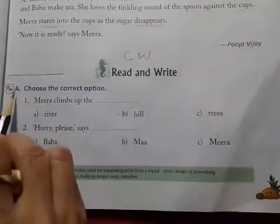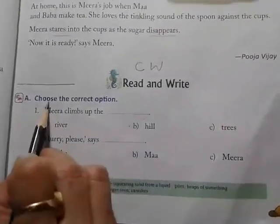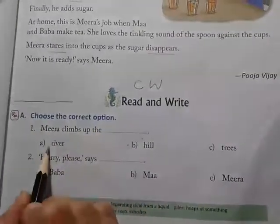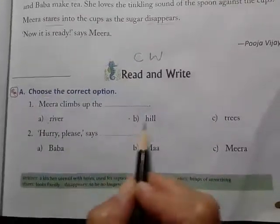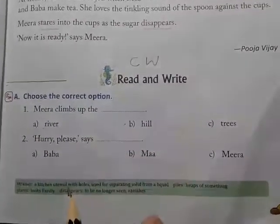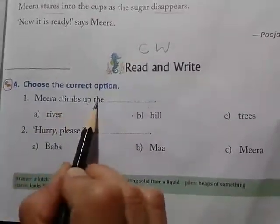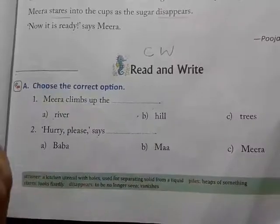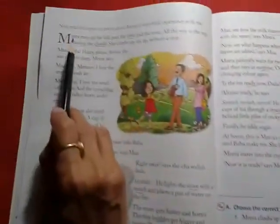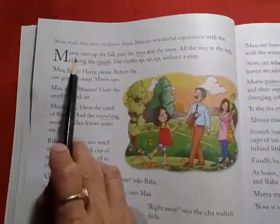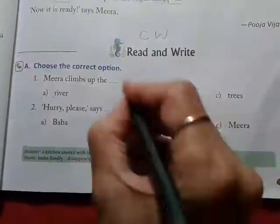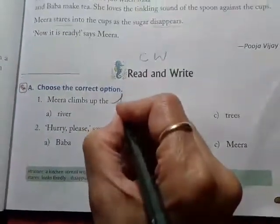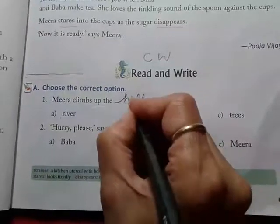Now we will start. Question A: Choose the correct option. Three answers are given; you have to put a tick on the correct option and write it here. Question 1: Meera climbs up the — Meera ne kahaan chad ke gai thi? She runs up the hill. So the correct answer is hill. Put a tick, underline, and write here: hill.